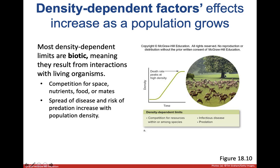Disease is another density-dependent factor. If there's a high population of organisms, disease spreads very easily. But if there are only one or two organisms in an environment, disease has a very difficult time spreading between them. High population density means a lot of organisms crammed into one area competing for resources, space, and mates, which has a significant impact on their population as a whole.